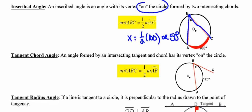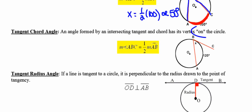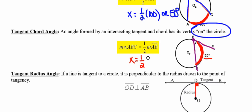A tangent-chord angle also has its vertex on the circle and also has a degree measure equal to half that of the intercepted arc. BC is the tangent and that's one side of the angle; AB is the chord, the second side of the angle. The intercepted arc is arc AB, which has a degree measure of 120. So angle X is going to have a degree measure equal to half of 120, which is 60 degrees.